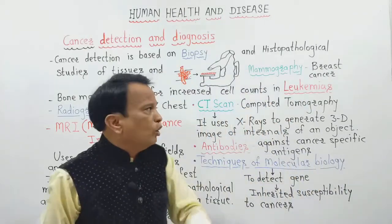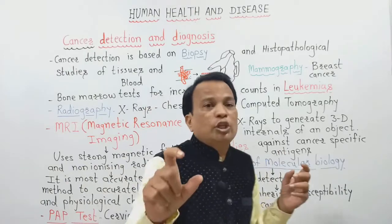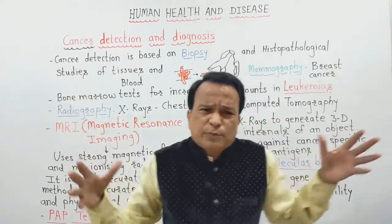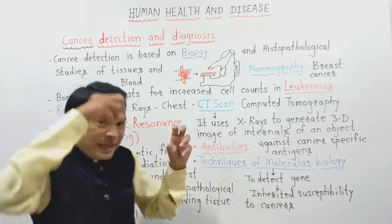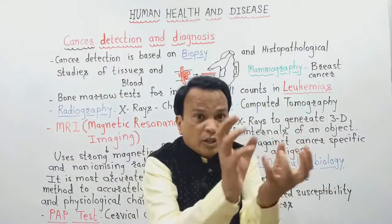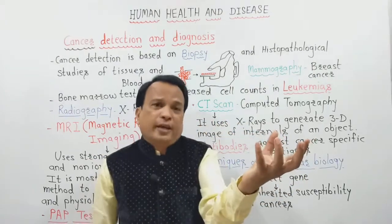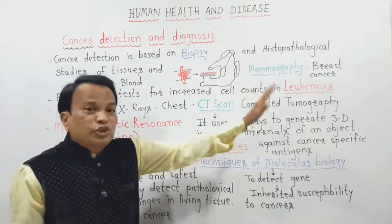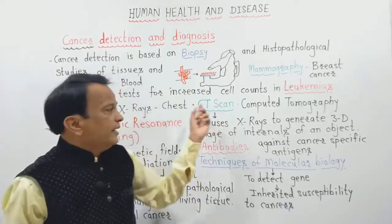There is also CT scan — Computed Tomography. In CT scanning, X-rays are used and pass through the body. Whatever object, tumor, or organ is inside, a 2D or 3D image is captured. CT scan uses X-rays to generate a 3D image of internal objects for identification of cancerous lesions.